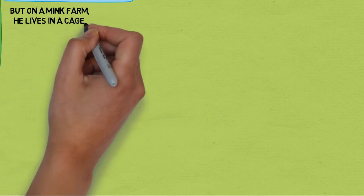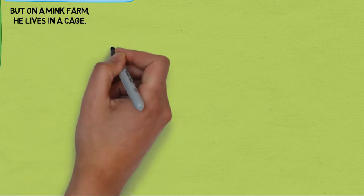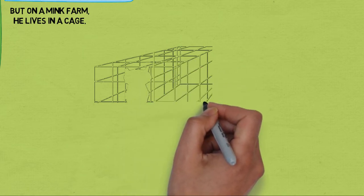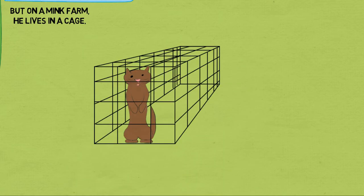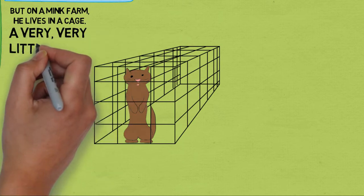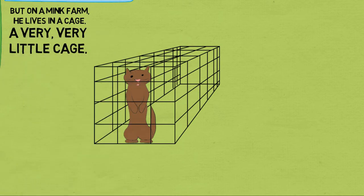On the many mink farms in Canada, however, minks live in small cages. Very small cages. Only 12 inches by 36 inches.